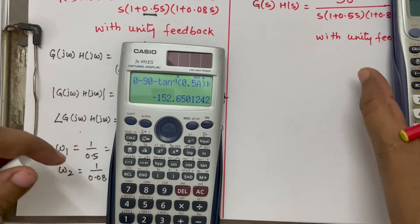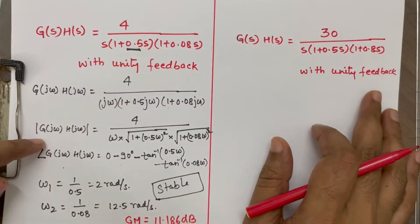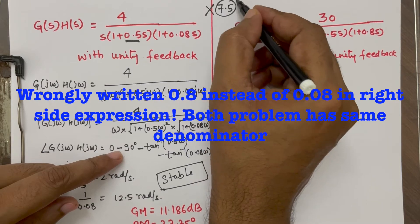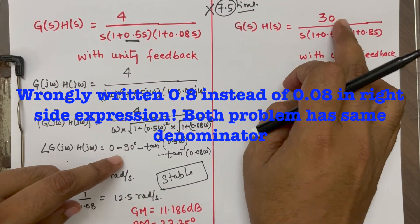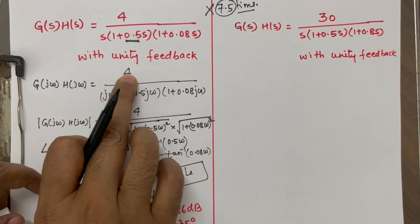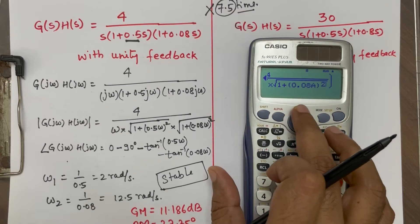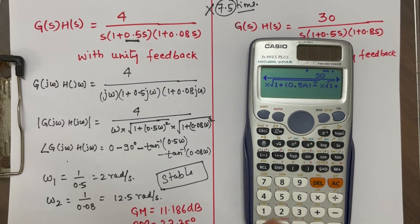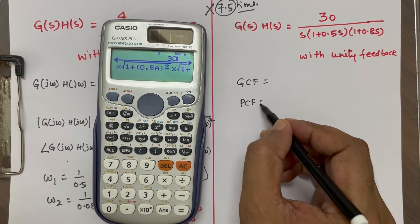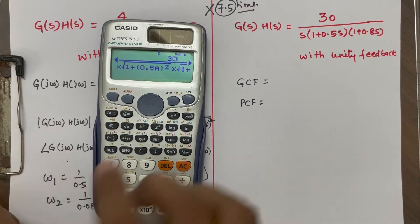Now we look at a modified expression where the numerator is changed from 4 to 30 — that is roughly 7.5 times larger. Only the numerator changes; the denominator remains the same. So in the magnitude formula we simply edit the numerator from 4 to 30. Because of this change, the gain crossover frequency will change, but let us check what happens to the phase crossover frequency. GCF is gain crossover frequency and PCF is phase crossover frequency.